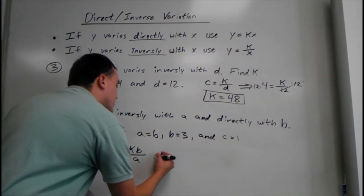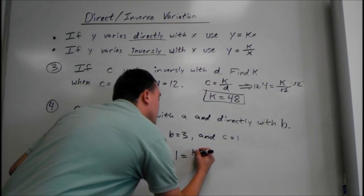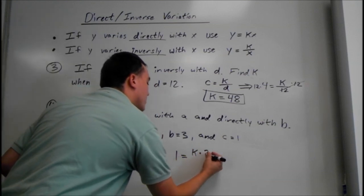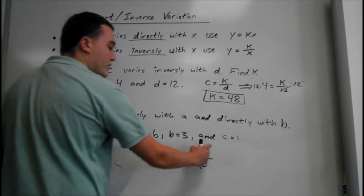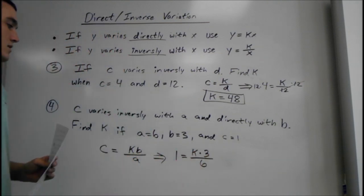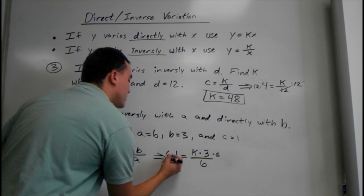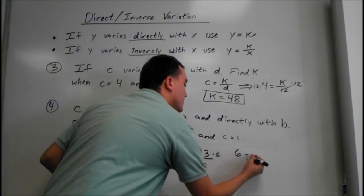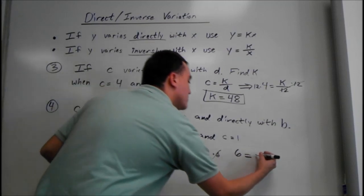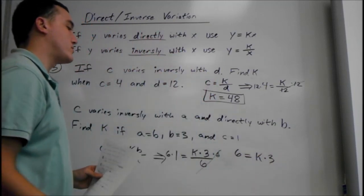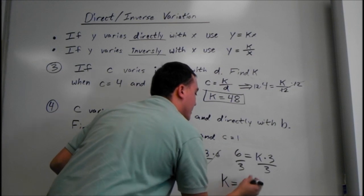We know c is 1, so this equation becomes 1 equals k times 3 over 6. Since we're dividing by 6, we multiply by 6 on both sides — those cancel. We get 6 equals k times 3. Then divide by 3 on both sides; those cancel. So k equals 6 divided by 3, which is 2.